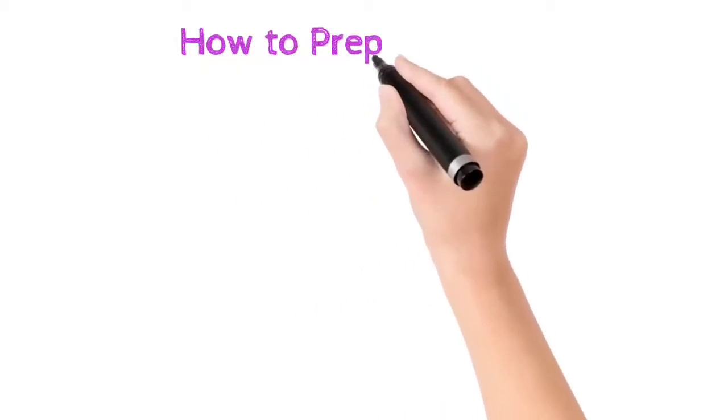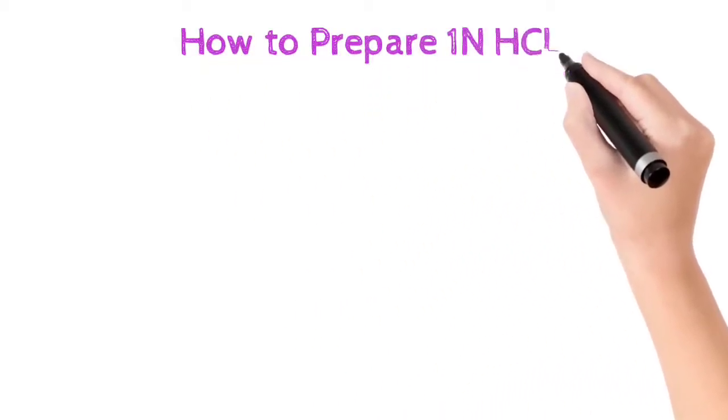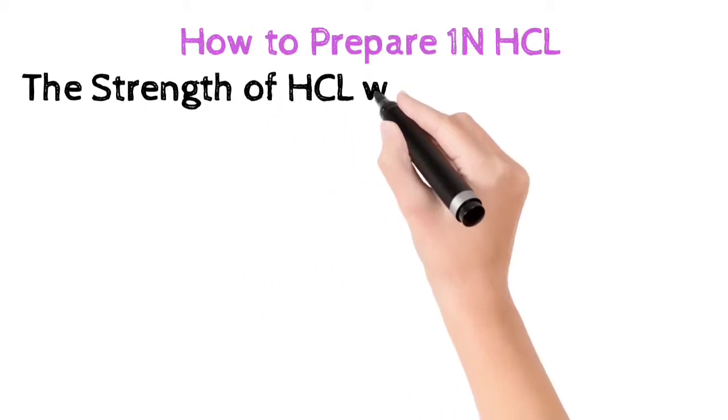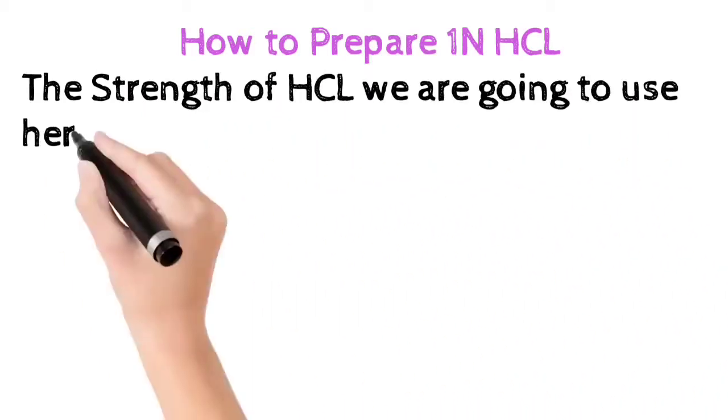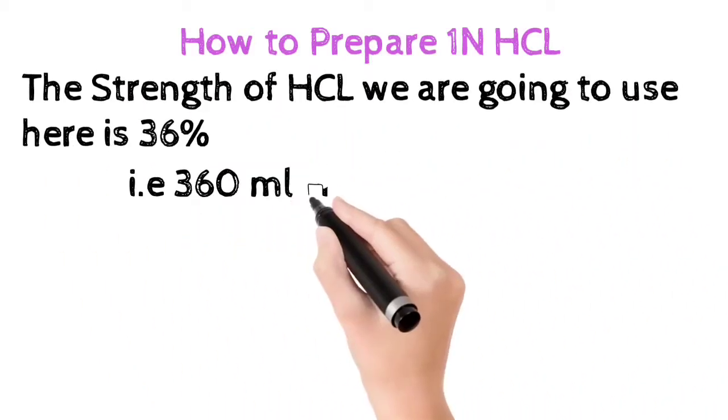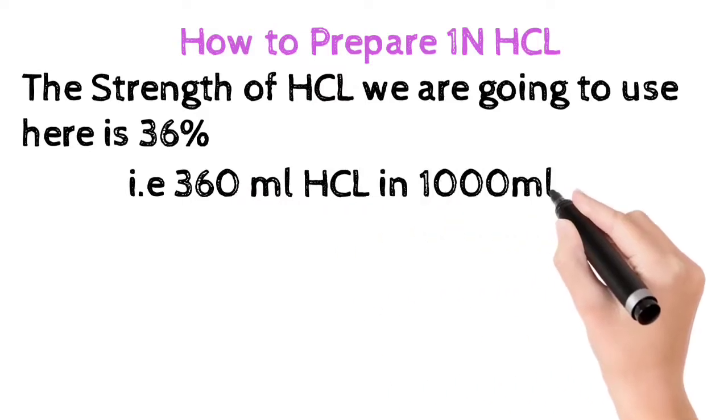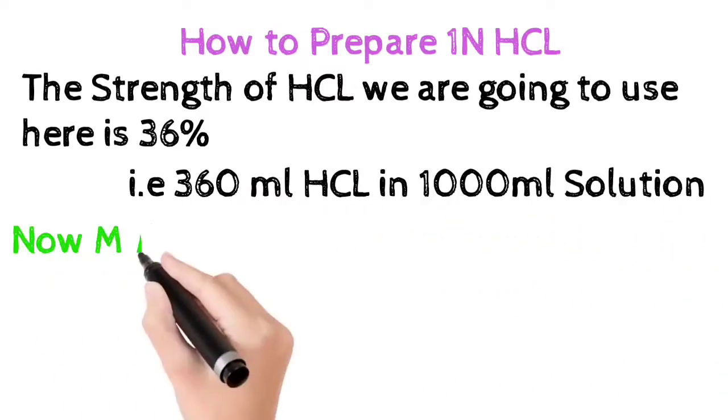In this video we are going to learn how to prepare 1 normal HCl. The strength of HCl we are going to take here is 36%. That is 360 ml of HCl present in 1000 ml solution.